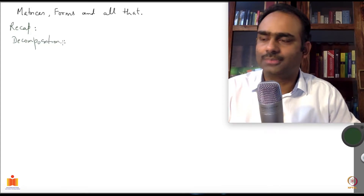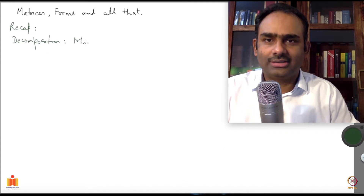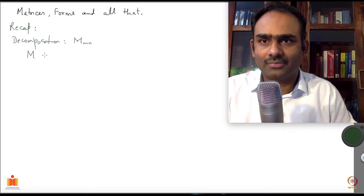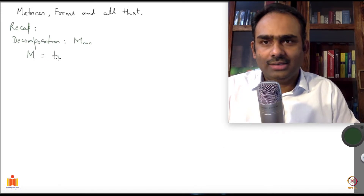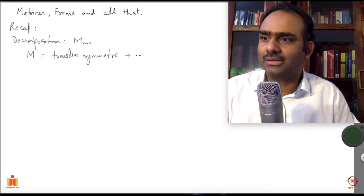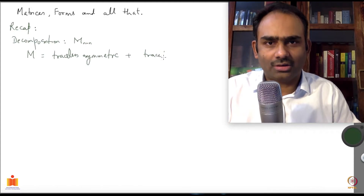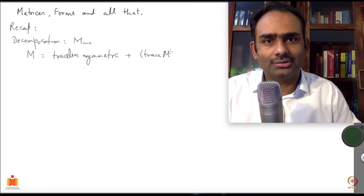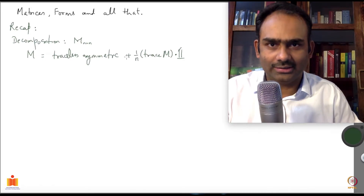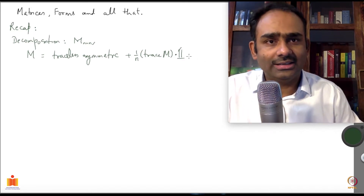Decomposition — this you can always do. If you have a matrix M which is n cross n, then you can write M as a traceless symmetric part, plus trace of M — which is a number, you just add the entries on the diagonal — times the identity matrix divided by n, where n is the dimension of the matrix, plus an anti-symmetric part.